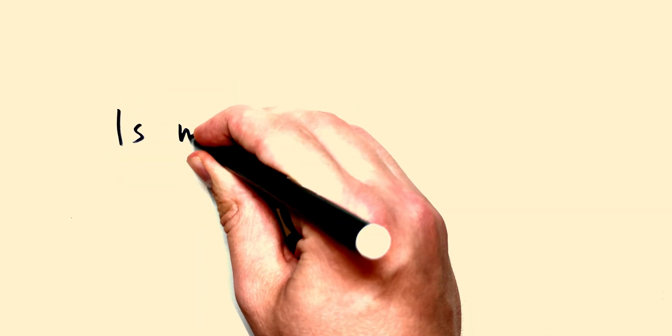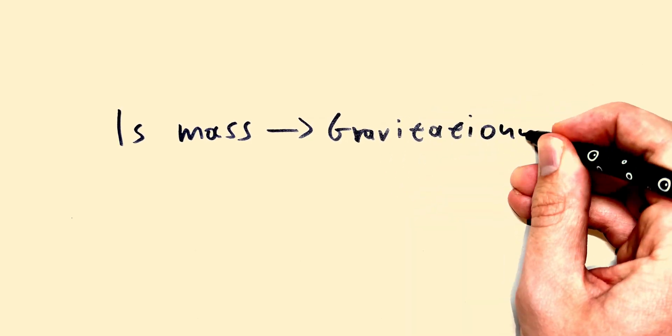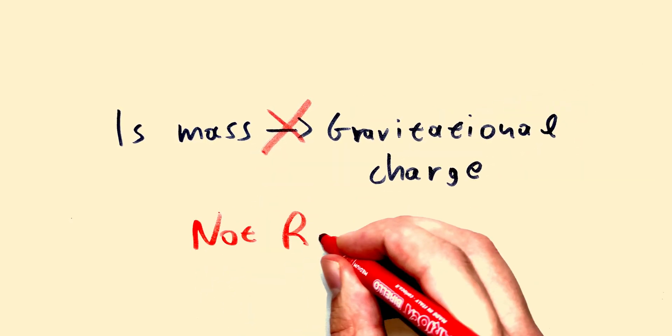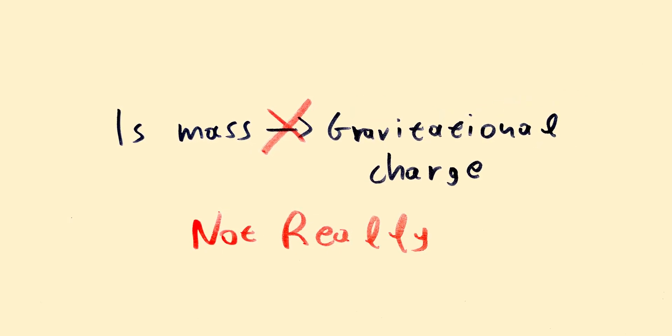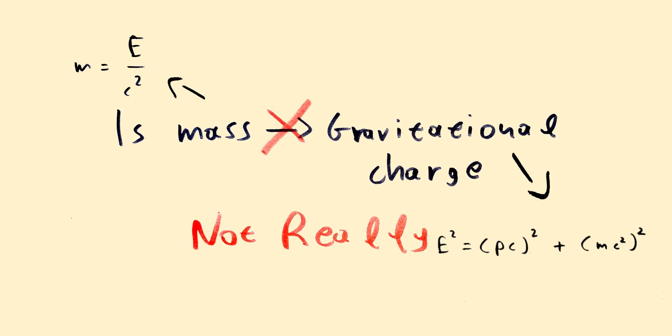So, is mass really the gravitational charge? Not really. Because gravitational charge doesn't depend only on the energy when an object is standing still, also known as mass, but also its momentum.